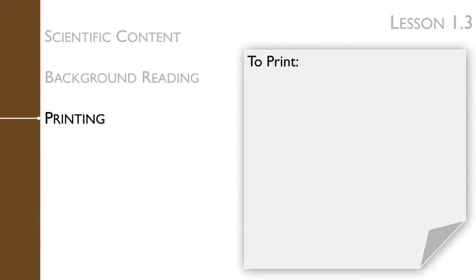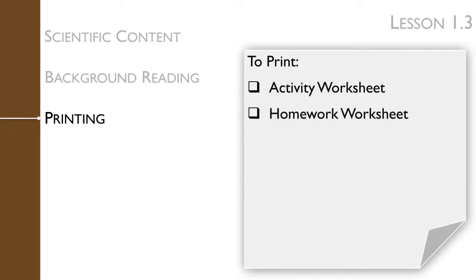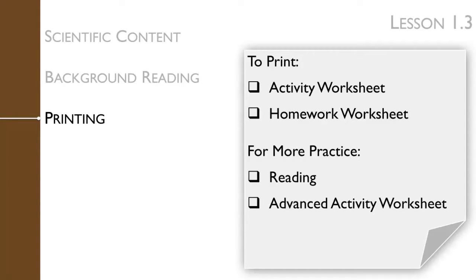You will need to print the food contamination worksheets for students. There are four case studies in the worksheet file. You may want each group of students to do all four case studies or just one case study per group — adjust the number of worksheets to print accordingly. You will also need to print a homework worksheet for each student. If you would like students to get practice reading more advanced materials, you may opt to use the advanced readings instead. Print one reading per group and print the advanced food contamination worksheet.